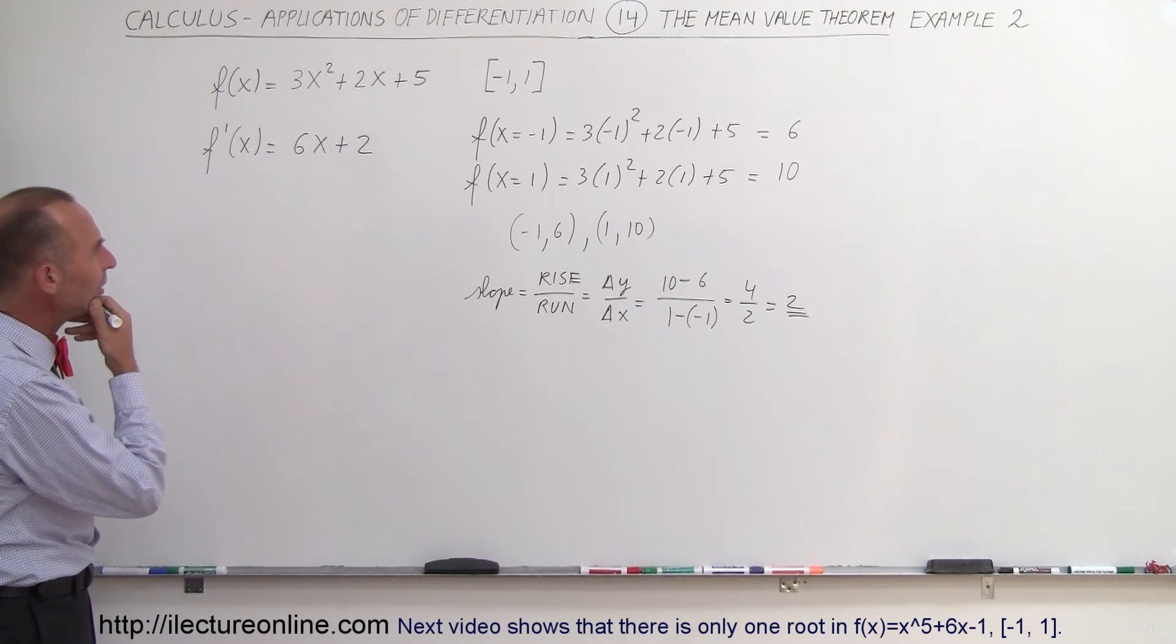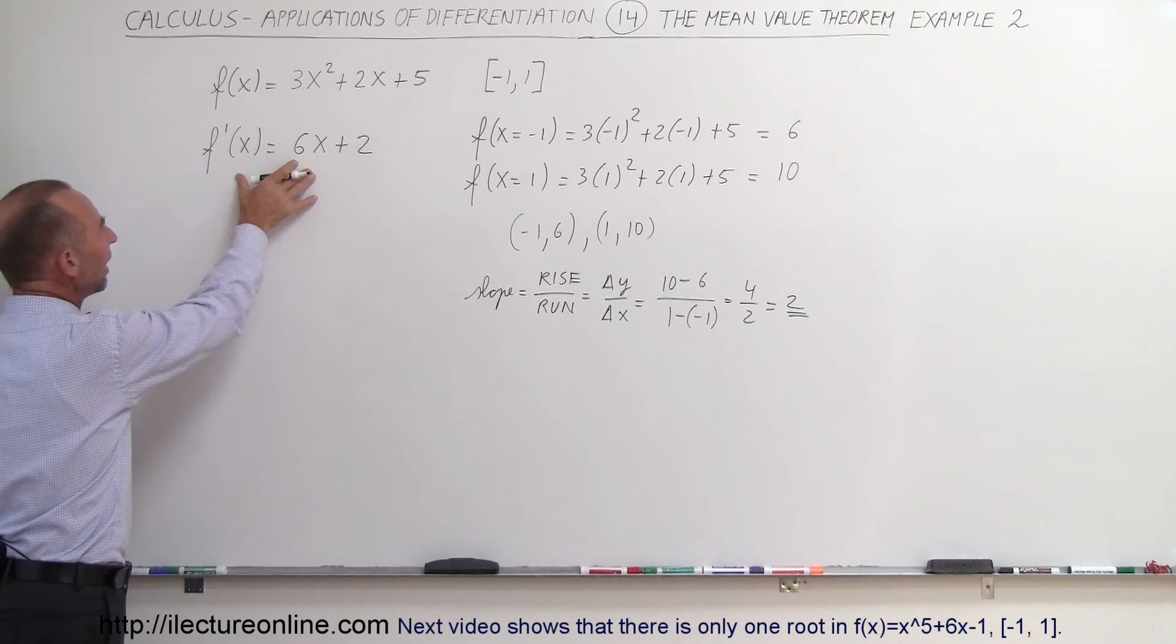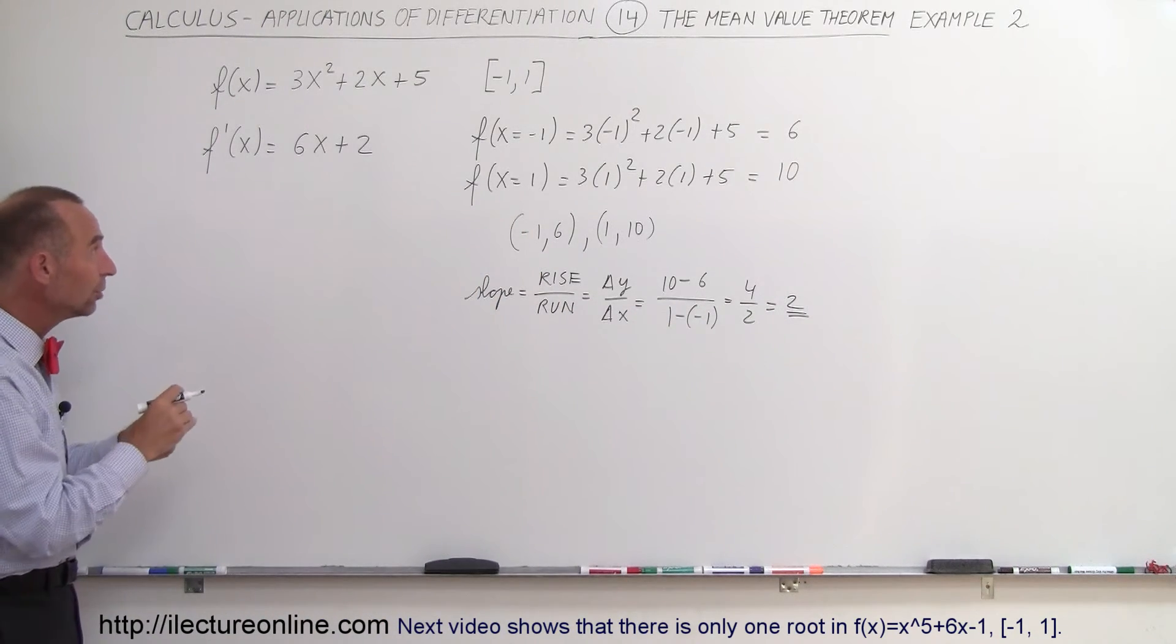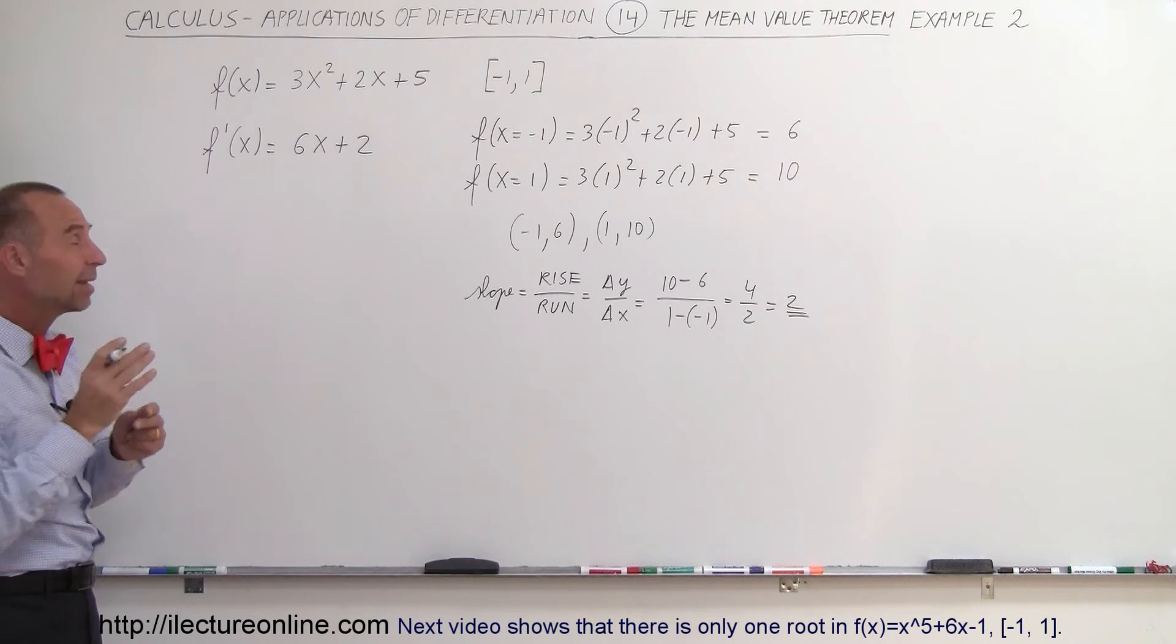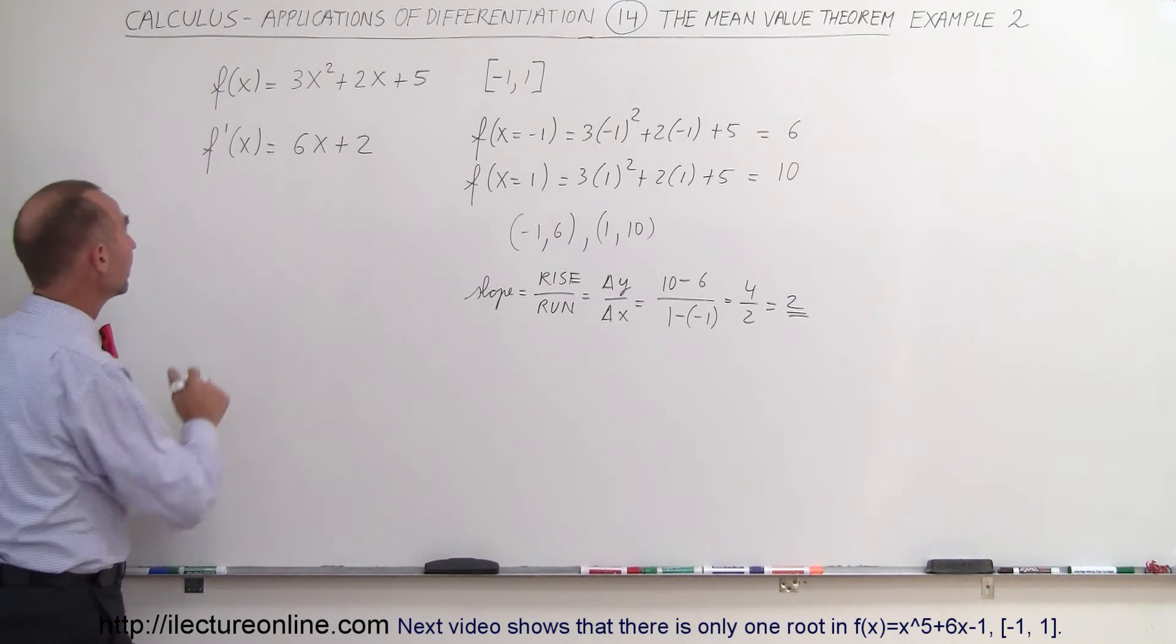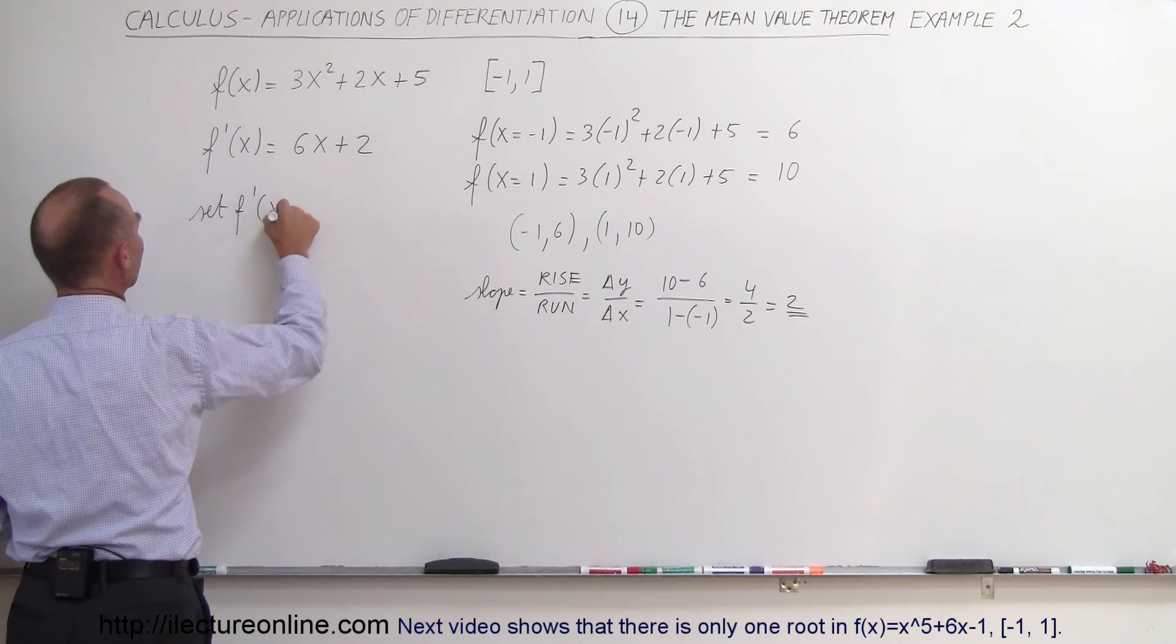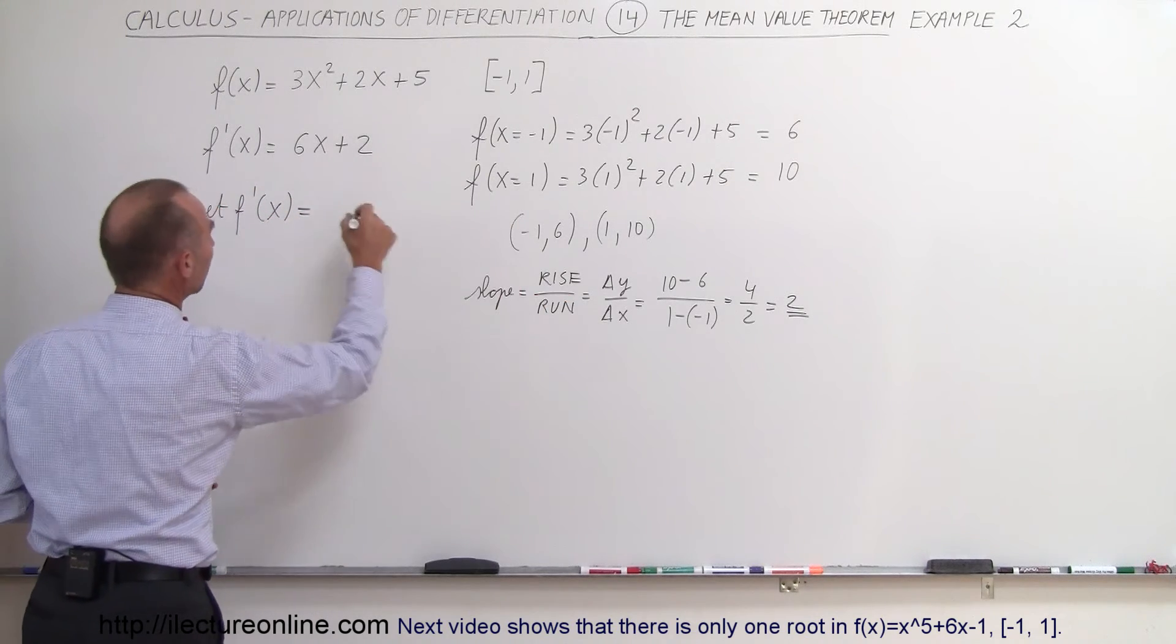Okay, so what we need to do now is take our derivative and set it equal to the slope, which will allow us then to find the x value that has the exact same slope when we have the derivative. Alright, so set f prime of x equal to the slope that we found.